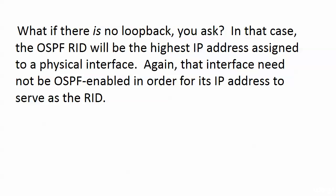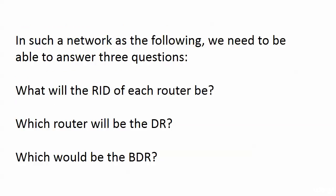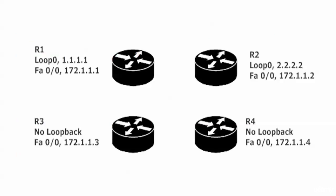That's a really important fact that'll be easy points on the exam. Going through our four routers: routers three and four have no loopbacks and only one interface with an IP address, so router four's RID would be 172.1.1.4 and router three's would be 172.1.1.3. Routers one and two have loopbacks, so their RIDs would be 1.1.1.1 and 2.2.2.2 respectively. The question wouldn't even need to specify which interfaces are OSPF enabled, because we know an interface doesn't have to be OSPF enabled to have its address used as the RID.